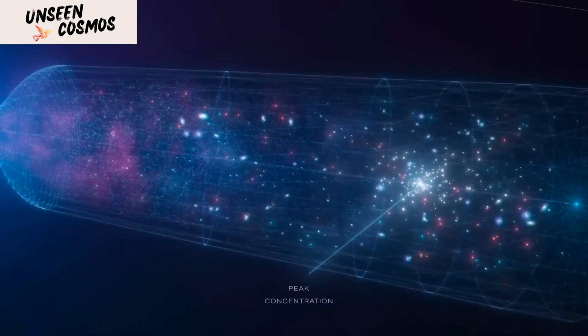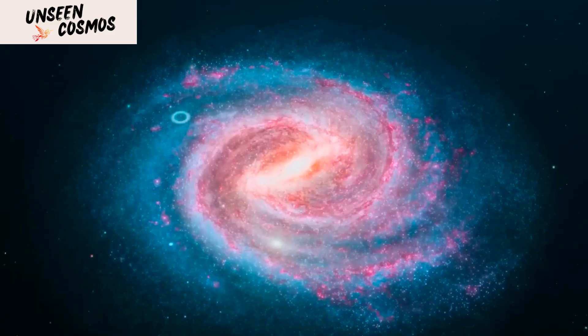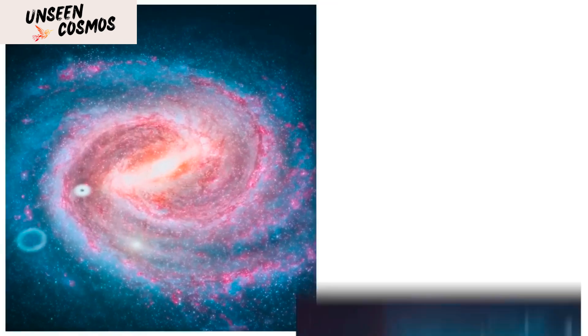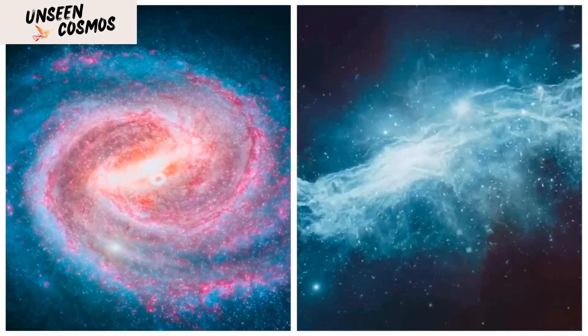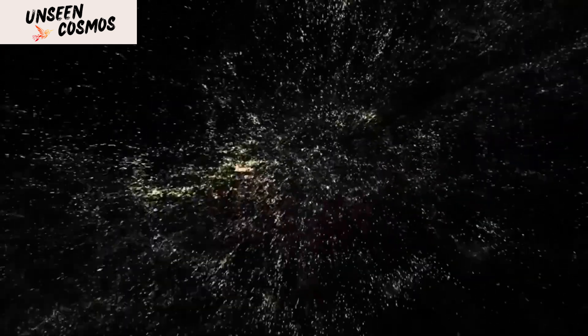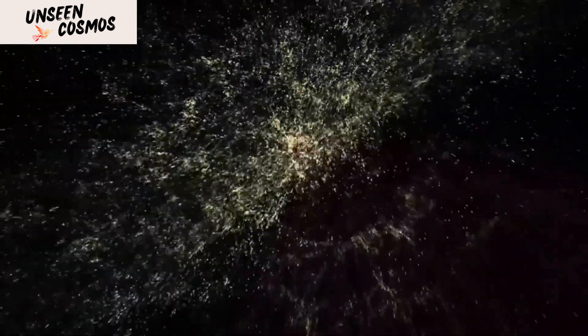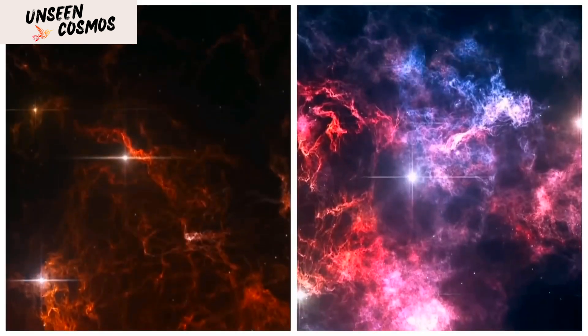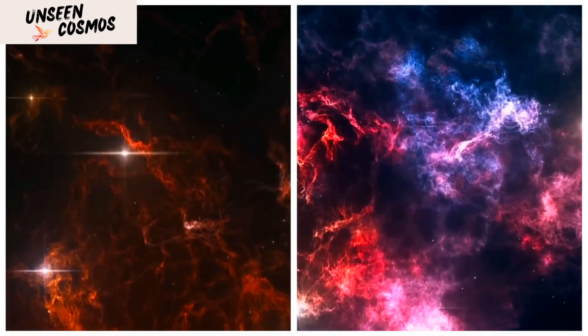This means that the light from this galaxy has been traveling for 13.3 billion years before it reached the James Webb Space Telescope, making this image a glimpse back in time to when the universe was just 500 million years old. The image is incredibly detailed and shows us a galaxy in its early stages of formation, with stars being born and shining brightly.